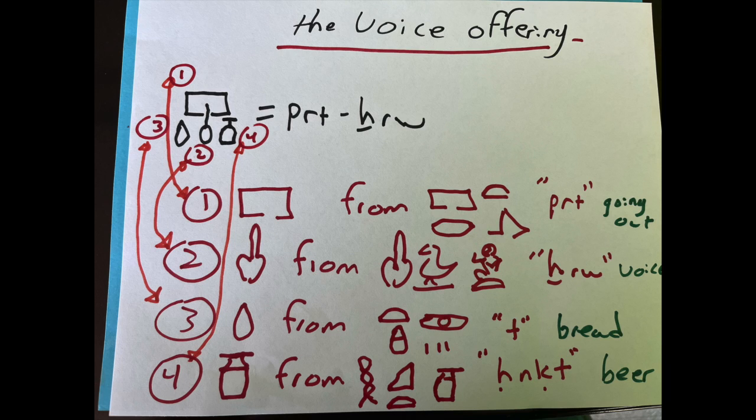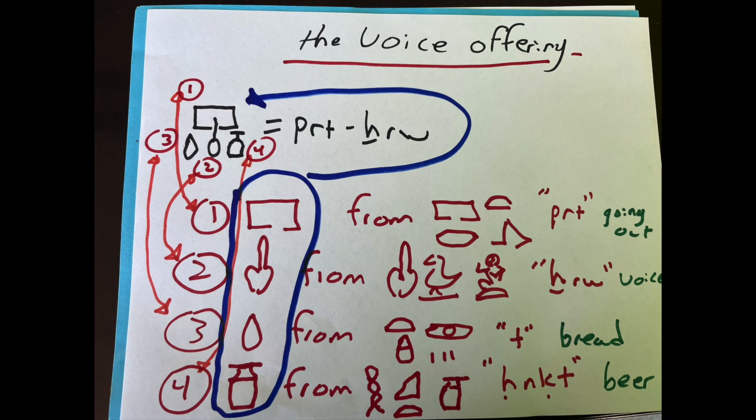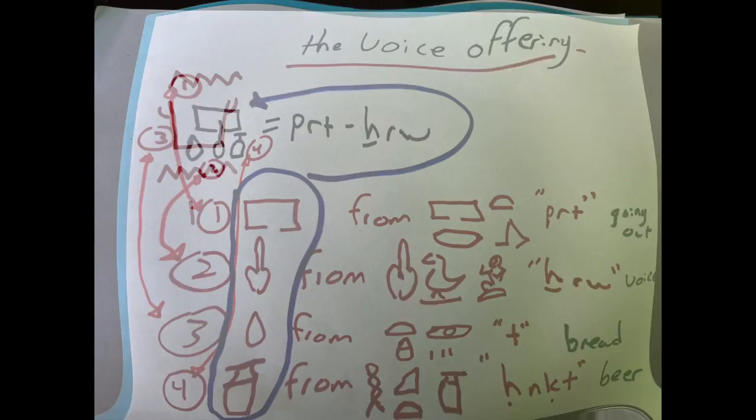So you can see each word gives one letter. All those letters I've circled there in blue become the voice offering, which follows up the offering formula.